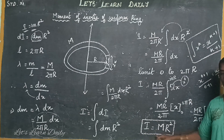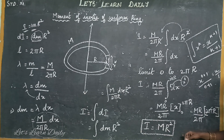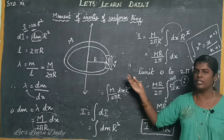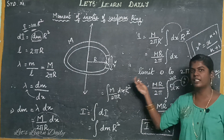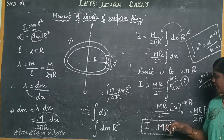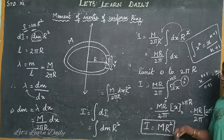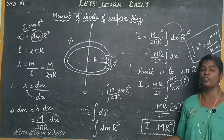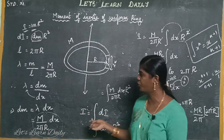Sorry — I equals MR squared. So this is the moment of inertia of a ring. After working through the ring shape, you can see that when you change the radius, the moment of inertia will be different.